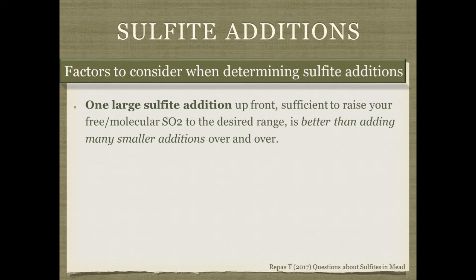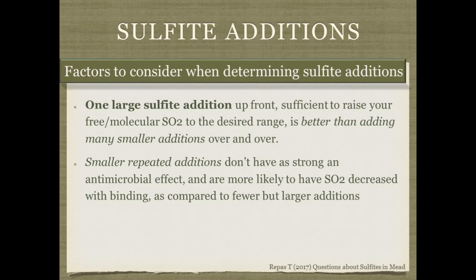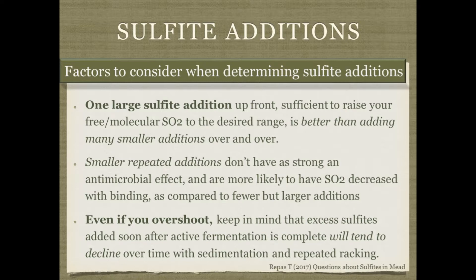Adding one large sulfite addition is much better than many smaller ones, especially up front. Smaller repeated additions don't have as strong an antimicrobial effect and are more prone to binding. You really want to hit unwanted microbes hard. Even if nervous about overshooting, keep in mind that excess sulfites added soon after fermentation finishes will tend to decline over time with sedimentation and repeated racking.